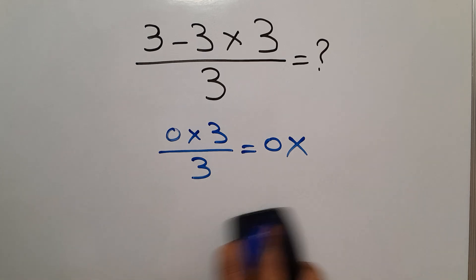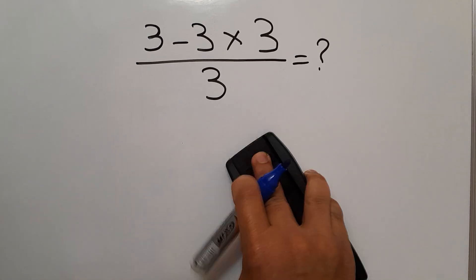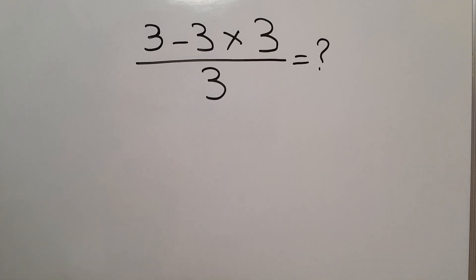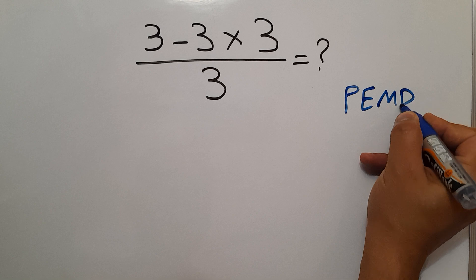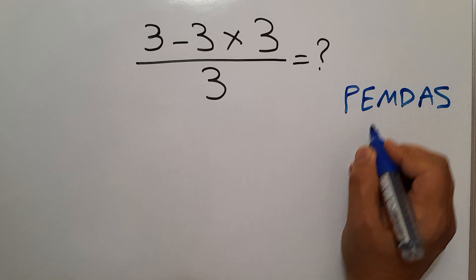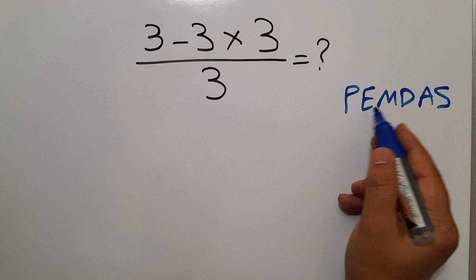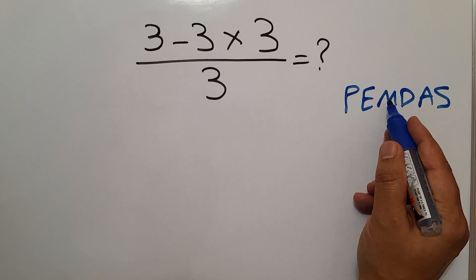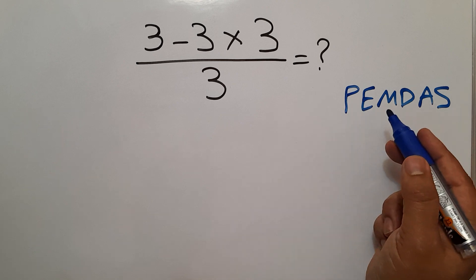Because according to the order of operations, which is PEMDAS, P stands for parentheses, E stands for exponents, M and D stand for multiplication and division, A and S stand for addition and subtraction. We first do parentheses.